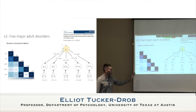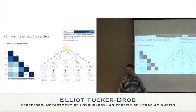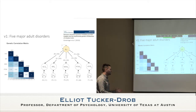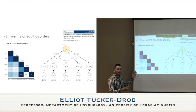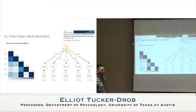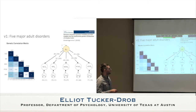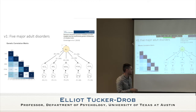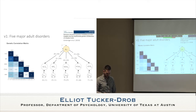In our first attempt, we started with five disorders and fit a single common factor. The factor model fit the data pretty well. We find a general factor we call P — because Caspi and Moffitt called it P — underlying schizophrenia, bipolar, major depression, post-traumatic stress disorder, and anxiety disorders. This was really more a proof of concept in the methodological paper that introduced Genomic SEM.